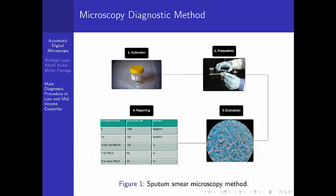Obtaining good samples requires very hard pipelines of extracting biological samples because you can extract saliva, mucus, or sputum — and the correct one is the sputum, because mucus and saliva are not useful in the diagnostic. As you may understand, extracting sputum from babies or even in old people is kind of hard.